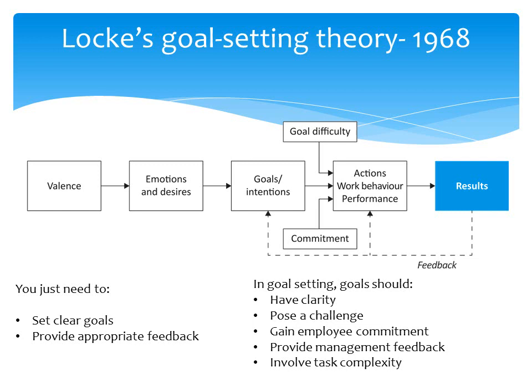Vroom's expectancy theory and Locke's goal-setting theory are relatively straightforward process theories — you need to set clear goals and provide feedback. For the exam, they cannot ask you about Locke or Porter and Lawler by name, but if you know at least two process theories — such as equity theory, Vroom, or Locke — that would be sufficient.